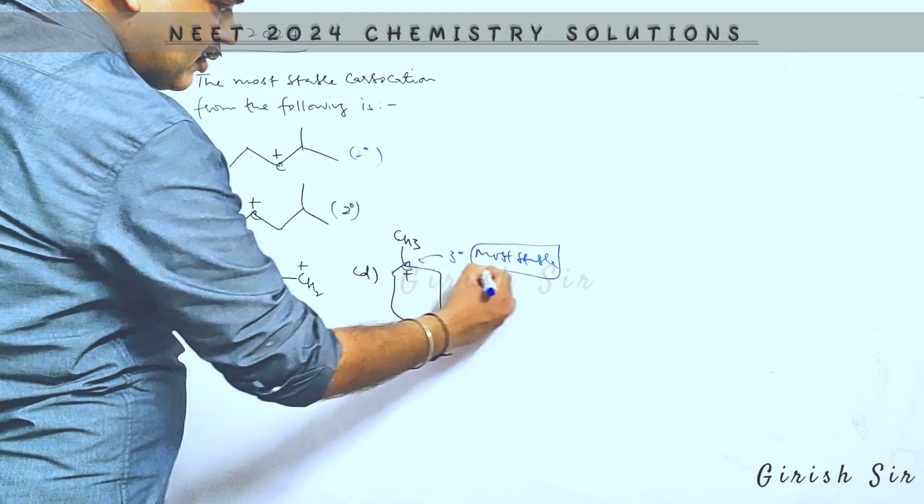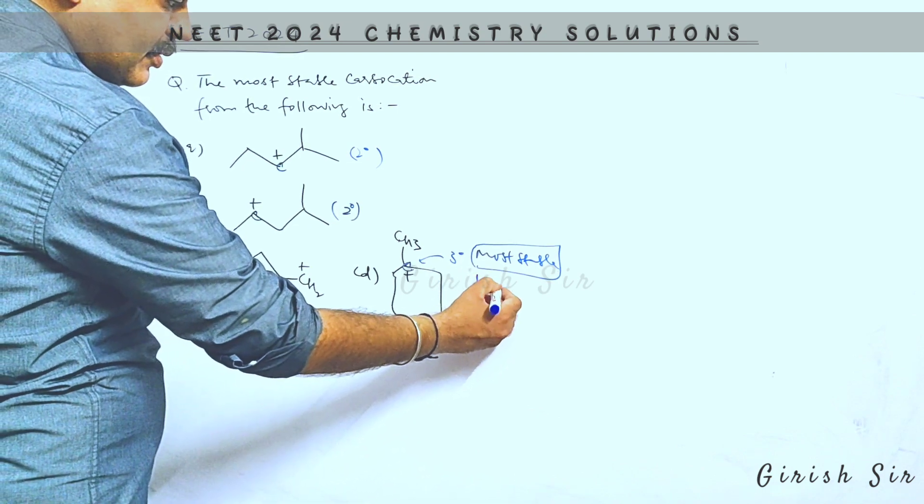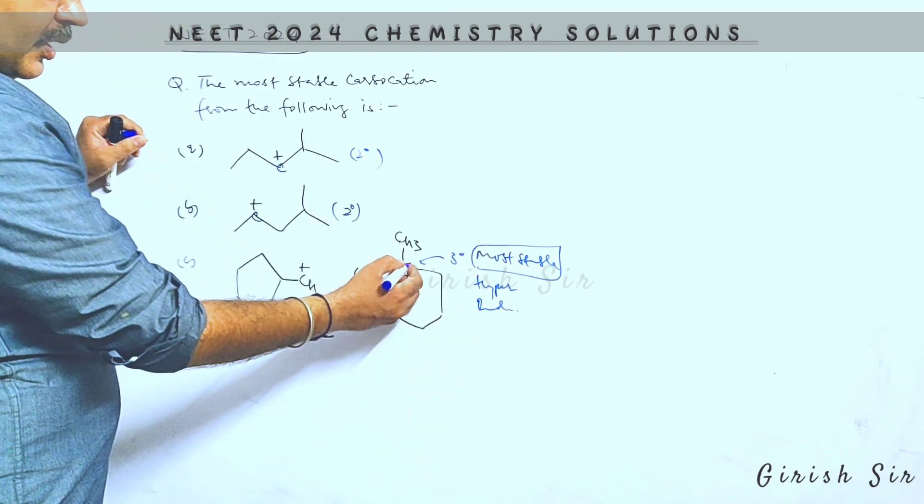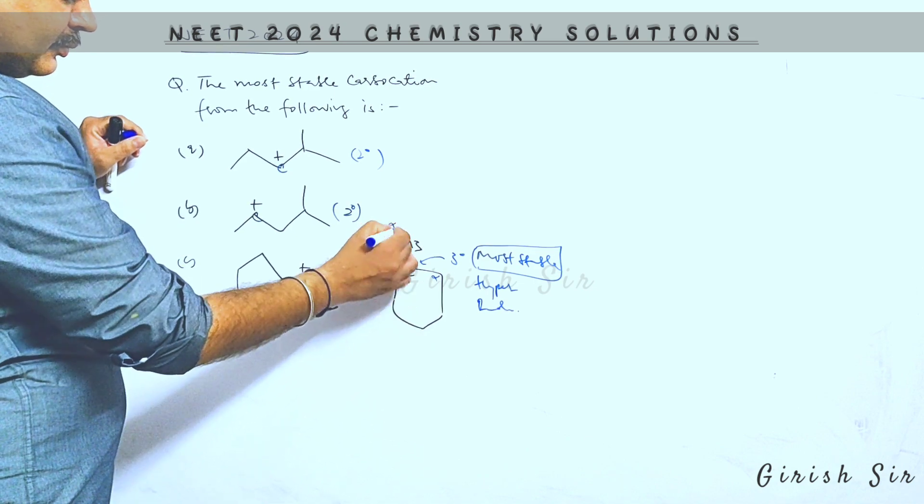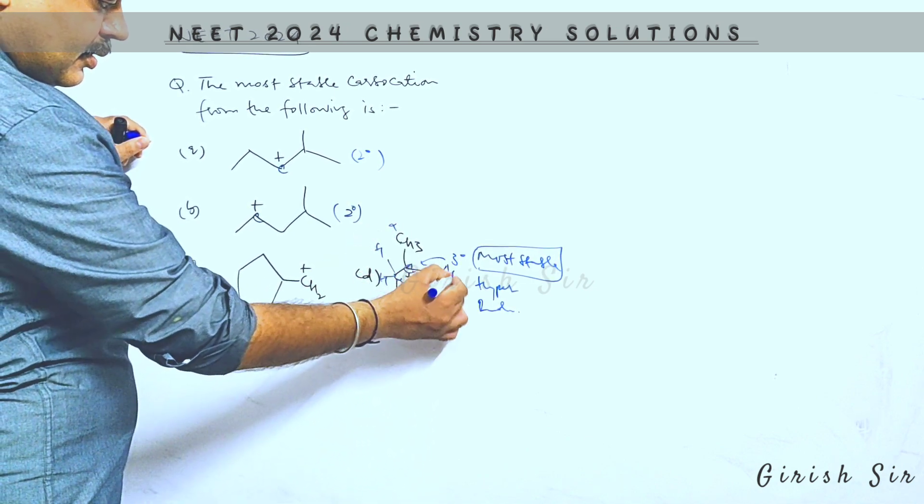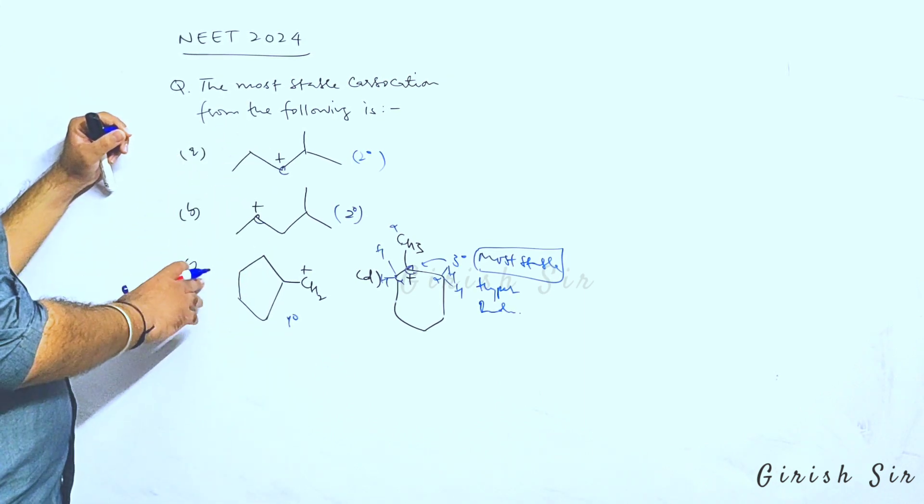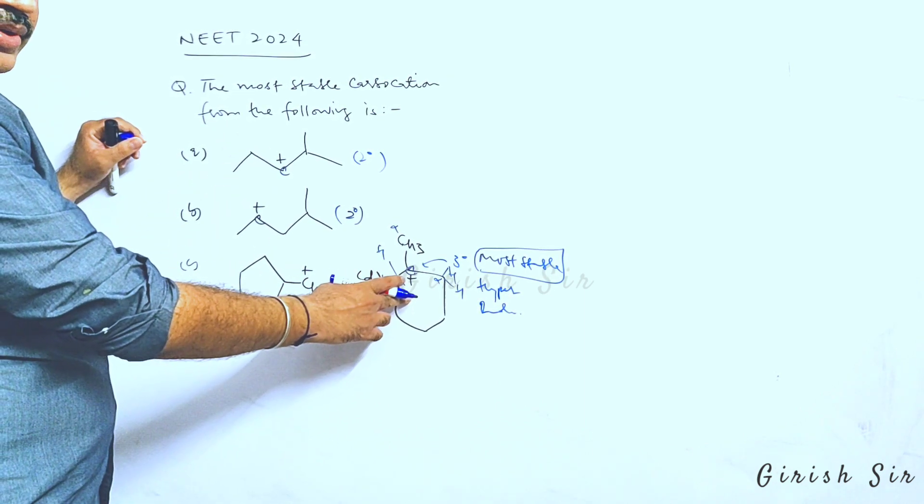Carbocation on the basis of hyperconjugation as well as inductive effect. Now if we check out the alpha carbons, it has a maximum number of alpha hydrogens available as compared to the other options. So maximum hyperconjugation is possible, making it the most stable carbocation out of these given options.